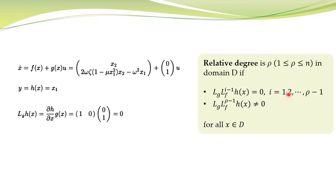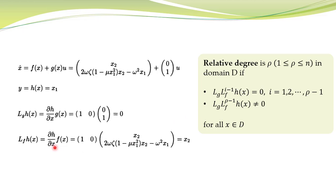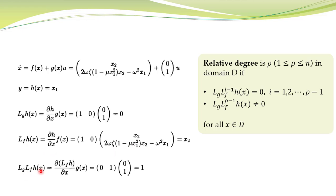Next, we compute for i equal to 2, which gives L_g L_f h(x). To compute this, we first compute L_f h(x) as partial h over partial x times f(x), which comes out to be equal to x2. Then we take the Lie derivative L_g L_f h(x), and this comes out to be nonzero. So the relative degree for this system is equal to 2: for i equal to 1 this expression is 0, and for i equal to 2 this expression is not equal to 0. Therefore the relative degree of this nonlinear system is equal to 2.